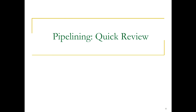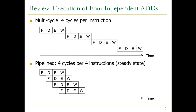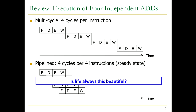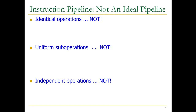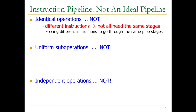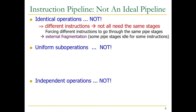So let's do a very quick review of pipelining because we're going to go a little bit deeper into pipelining and talk about some of the design issues. This was one of the first pictures I put up when we talked about pipelining — this is a multi-cycle machine. Pipelining enables you to pipeline different parts of the data operation of different instructions. You can have four cycles per four instructions instead of four cycles per instruction. Life always is beautiful, and it's always a good idea to ask questions.